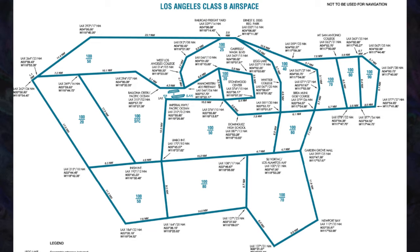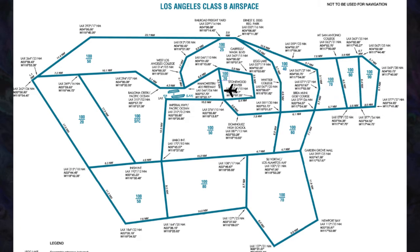If you can figure out how the traffic flows in and out of the airport, you might understand why Class Bravo is arranged the way it is. If you're coming into LA from the east as a big airliner, you'll be allowed to descend to 9,000, then 8,000, 7,000, 4,000, 2,500, 2,000, and then all the way down to the surface. Coming in from the south, it's the same sort of thing — 8,000, 5,000, as you go around and land.